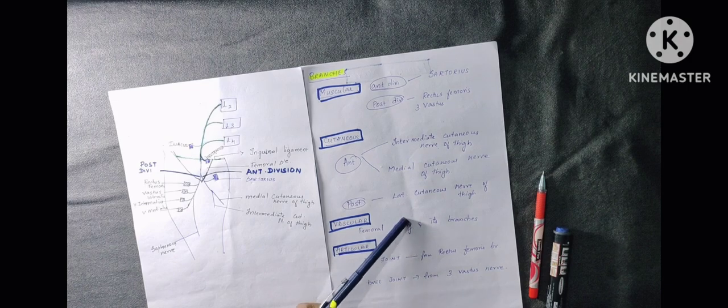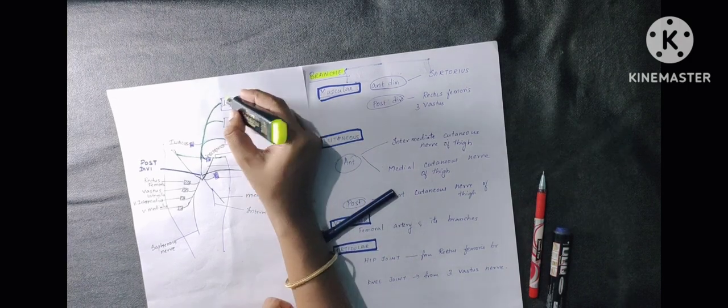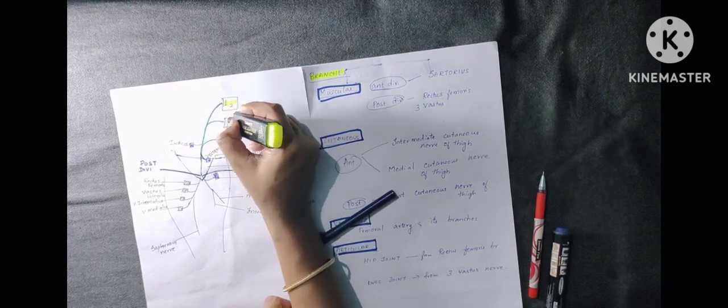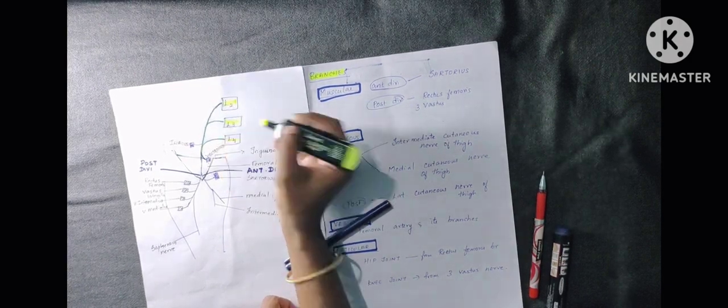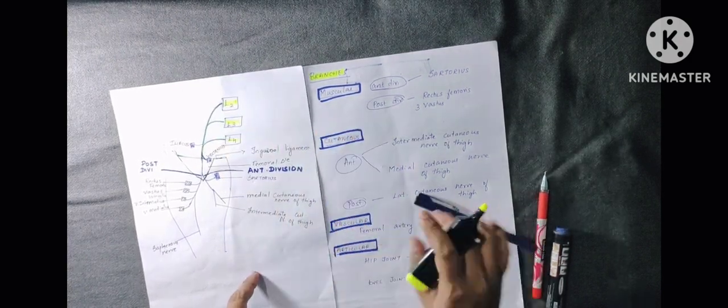Looking at the diagram: L2, L3, and L4 nerve roots form the femoral nerve.